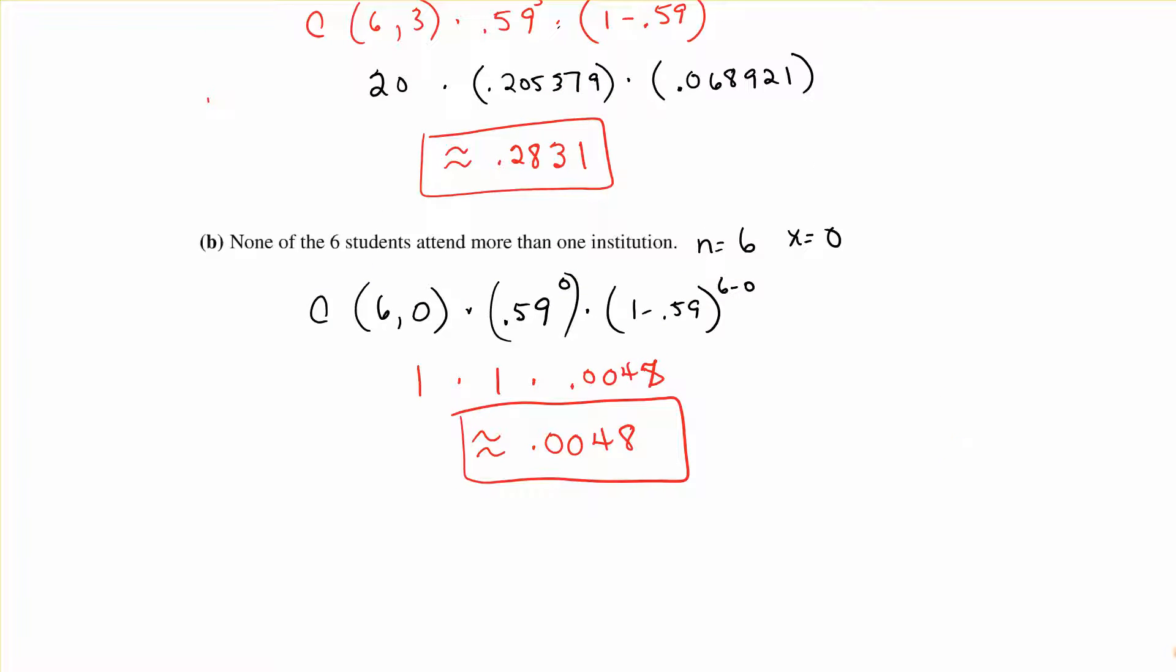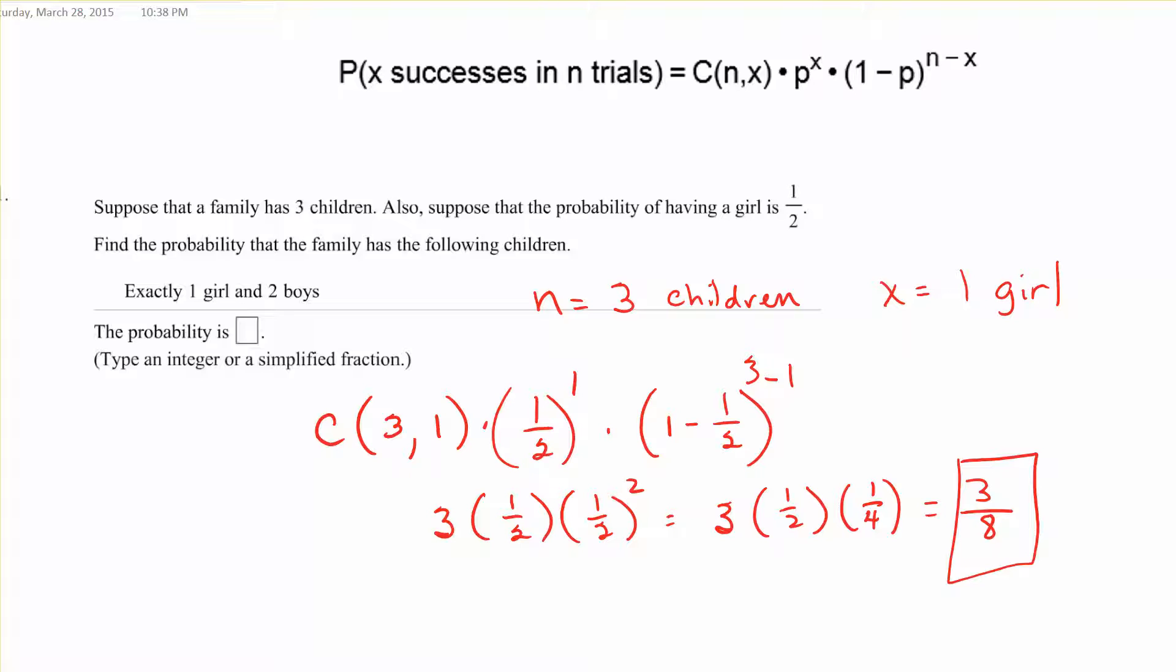So that's how we're going to use it. We're only having a few problems on this. So problem 1 of our problems and I've put the formula up here to remind us. Suppose a family has 3 children. Also suppose that the probability of having a girl is 1 half. Find the probability that the family has the following children.